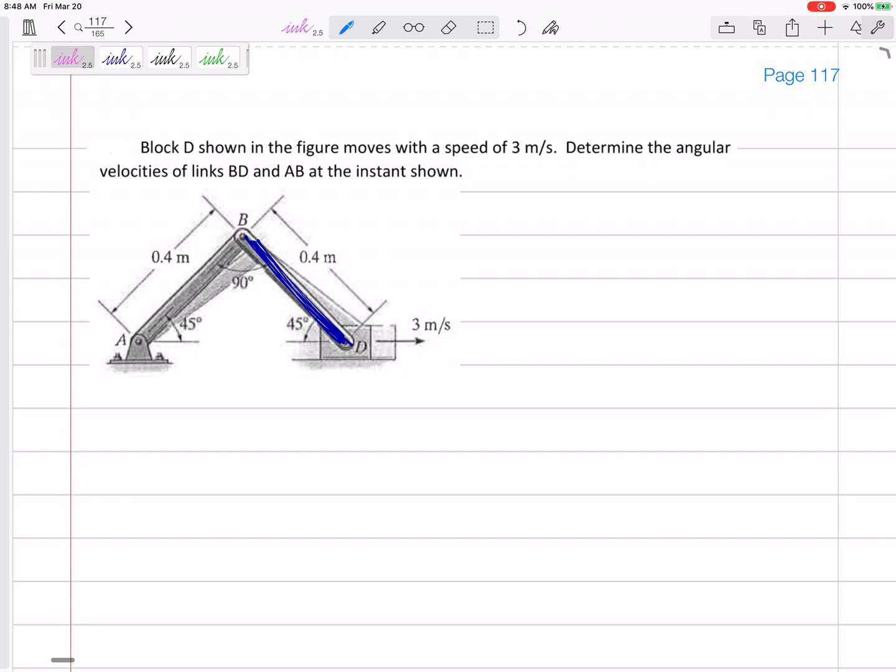Let's find the instantaneous center for bar BD. Well, first, step one, let's draw these velocity vectors. I know that that velocity vector is going right there because it's confined along the slot. All right, then how about this velocity vector for point B? The direction of point B is not controlled by this blue bar. Let's just throw it away. The direction for point B is controlled by link AB.